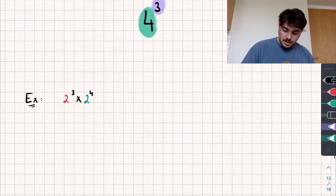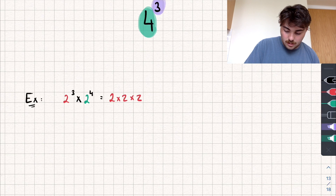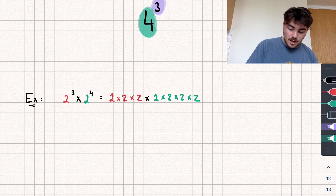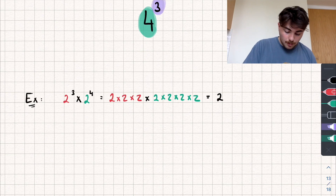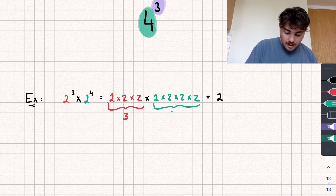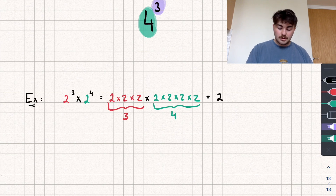Let's take a look at the first example. If we have two cubed multiplied by two to the power of four, and we want to express this as two to the power of some other number — well, two cubed means two times two times two, and two to the power of four means two multiplied by itself four times. In total we're adding the powers: three plus four gives us seven, so the answer is two to the power of seven.